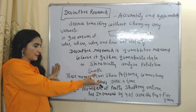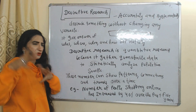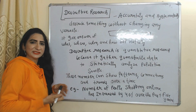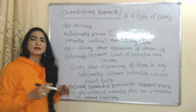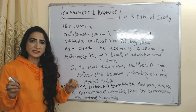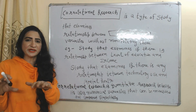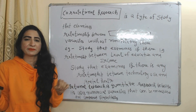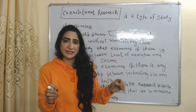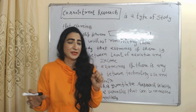For example, the number of people shopping online has increased by 40% over the past five years — this information is collected through descriptive research. Next is correlational research. Correlational research is a type of study that examines the relationship between variables without manipulating them.